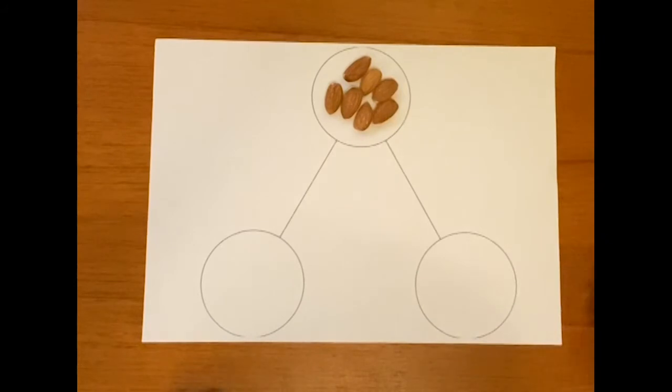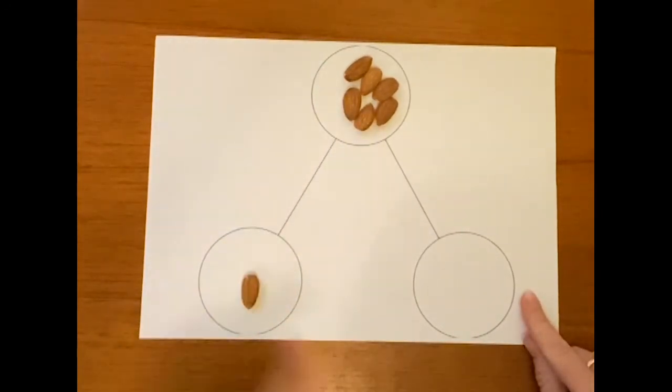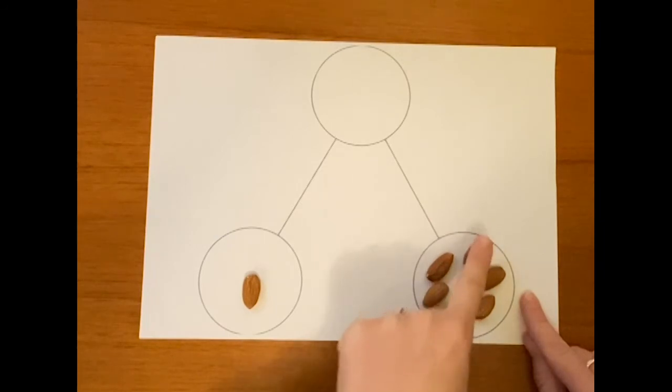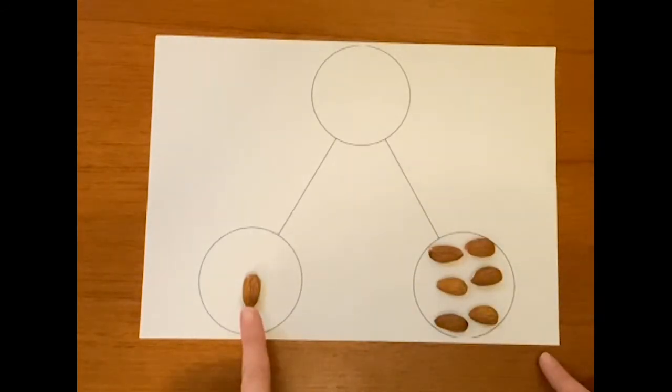Okay. So I've got all seven back in the top, in the whole, the whole part that's up here, and I'm going to split them into two parts. So I'm going to have one going down here. I wonder if you can count how many are going into this part. That's right. It's six. One and six makes, that's it. It's seven. Well done, everyone.